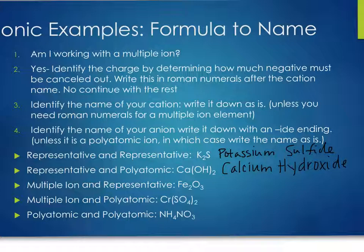For Fe₂O₃ — multiple ion and representative element: iron is on the multiple-ion list, so I can't just guess its charge. Oxygen is in group six, meaning it holds a minus two charge. With three oxygens, there's a total of minus six charge, which means the two irons together must equal plus six — so each iron is plus three. Write iron(III), and since oxygen is the second word as an element, drop the ending and add '-ide': iron(III) oxide.